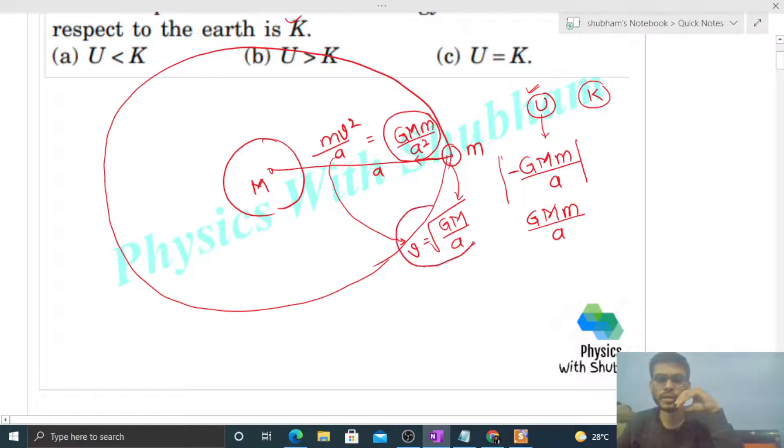What will be the kinetic energy of the Moon? That is half of mass into speed squared, which equals GMm/2a. So this is the value of kinetic energy and we have the value of potential energy.